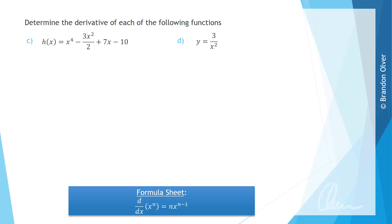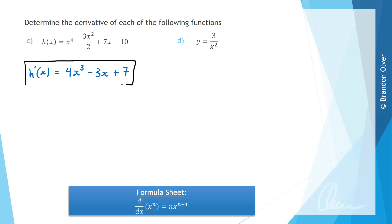For part C, h(x) equals x to the power of 4 minus 3x squared over 2 plus 7x minus 10. The derivative h'(x): we take the power and multiply it out the front, so the first term gives 4x cubed. For the second term, the multiply by 2 and divide by 2 cancel, leaving minus 3x. Then plus 7x becomes positive 7, and the constant minus 10 differentiates to 0. That is the derivative for part C.